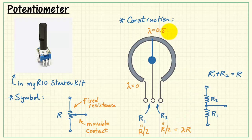At this point, it looks like the resistance is lambda times R, because at this point, when lambda equals 1 in the fully clockwise position, R1 now becomes R, and R2 becomes 0.